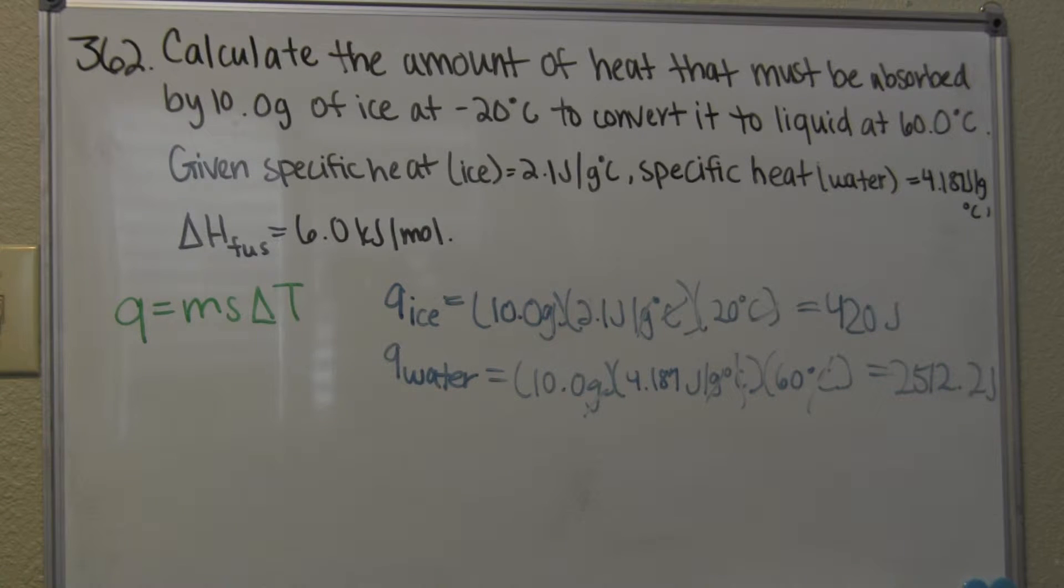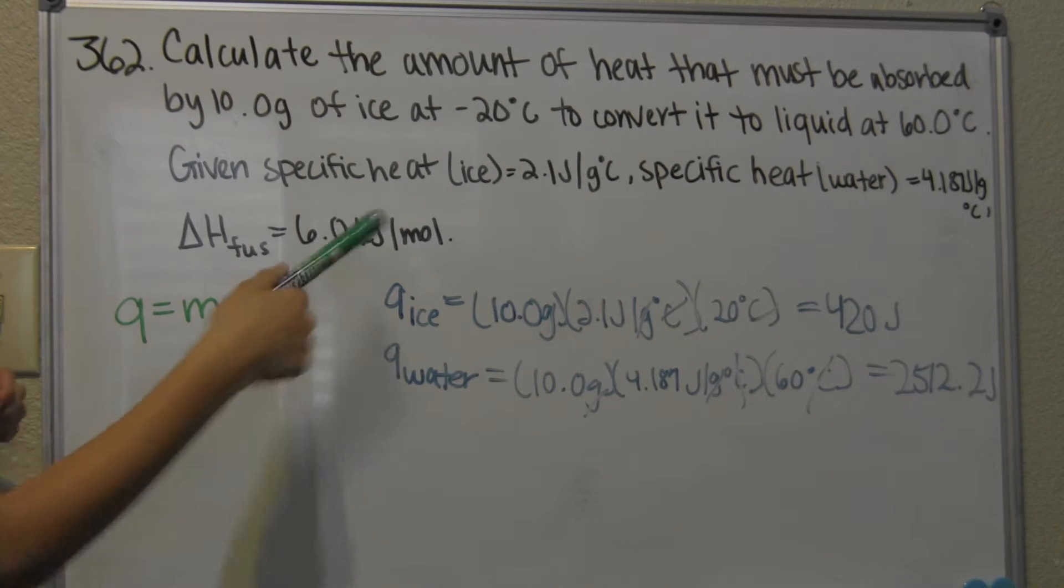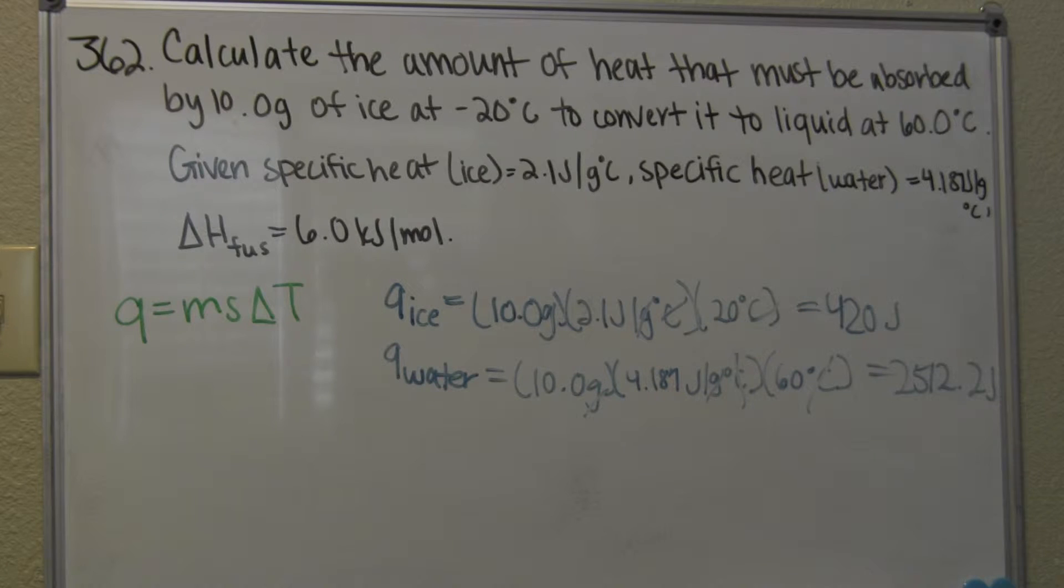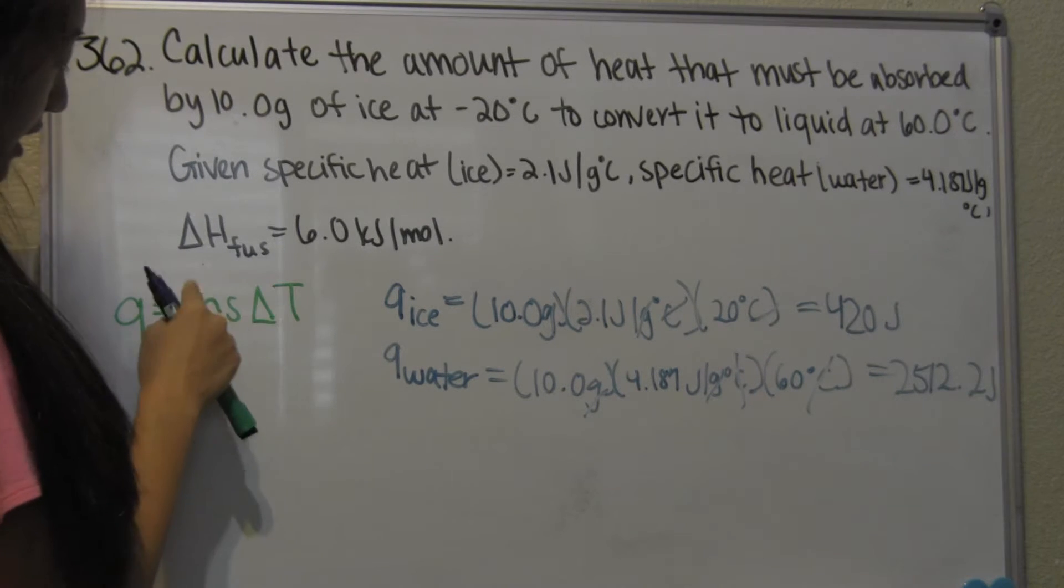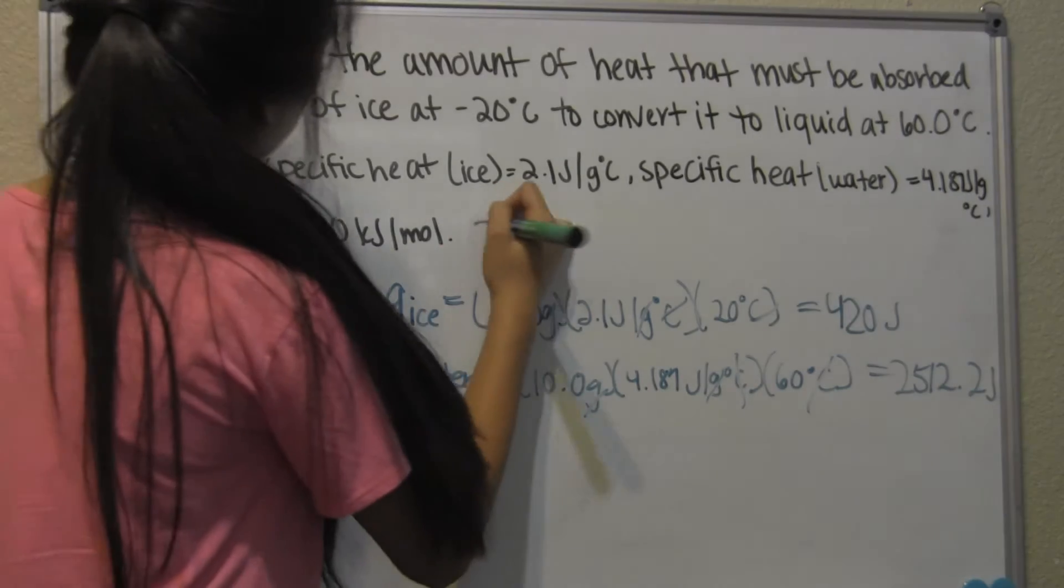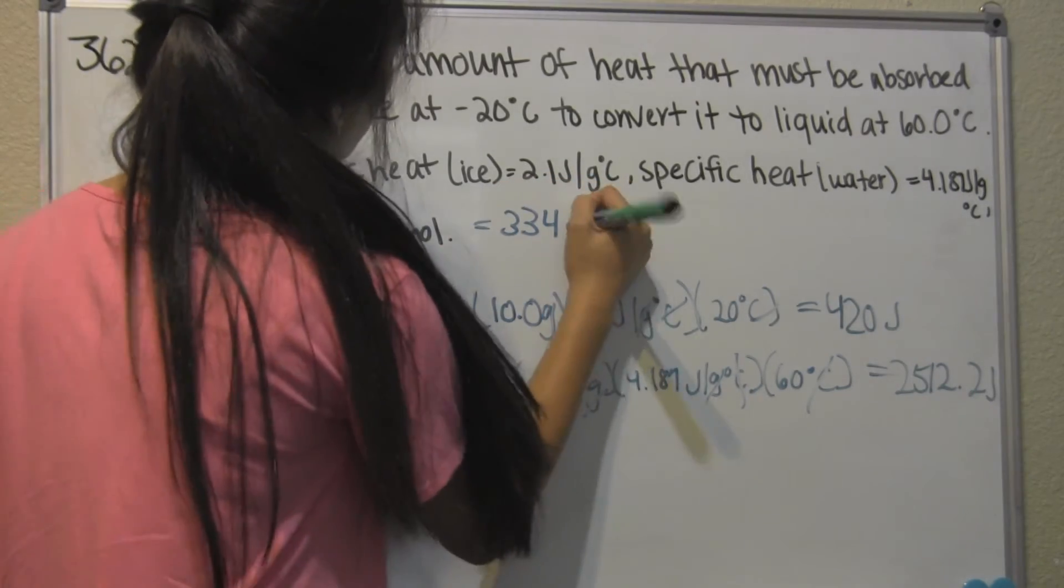Now we have the heat of ice, and we have the heat of water, and we have to find the heat at which it changes from ice to water, which is called the latent heat of melting. The H of fusion that we have, the delta H of fusion is equal to 334 joules.